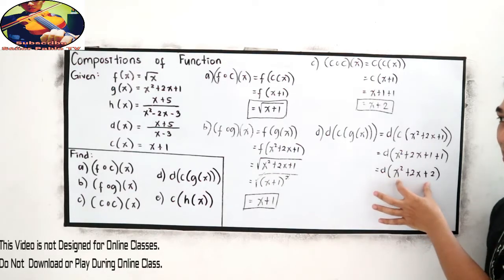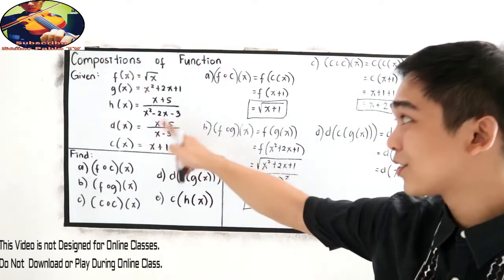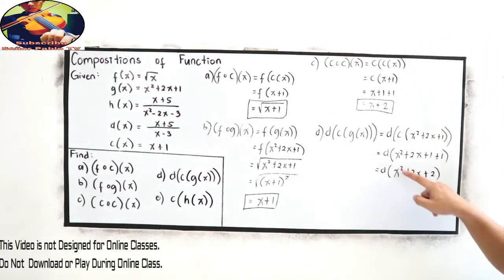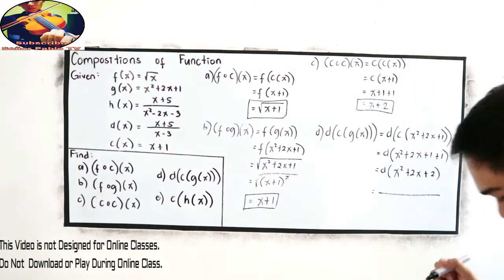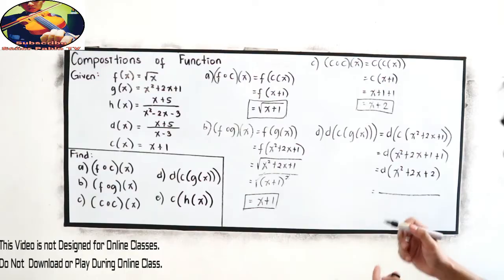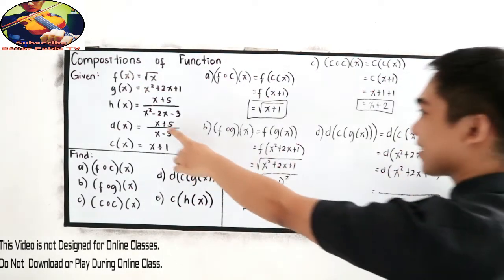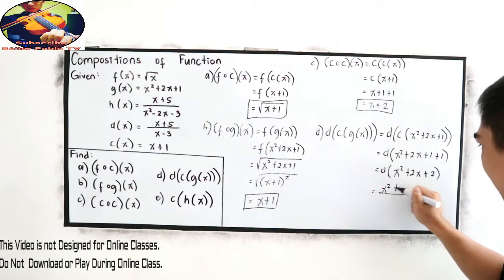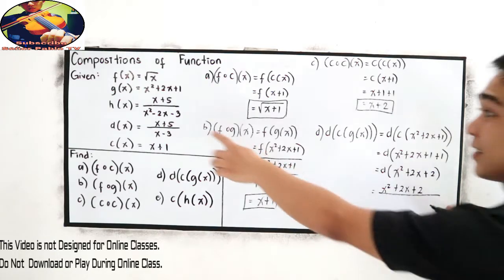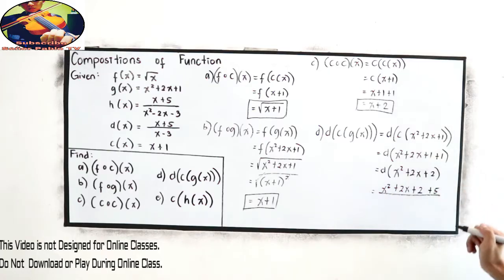Then, d of x. Where is d of x? It's here. So, change the value of x to x squared plus 2x plus 2. So, x plus 5. Change x to x squared plus 2x plus 2. Copy plus 5. And for our denominator, x squared plus 2x plus 2 minus 3. Now, combine like terms.